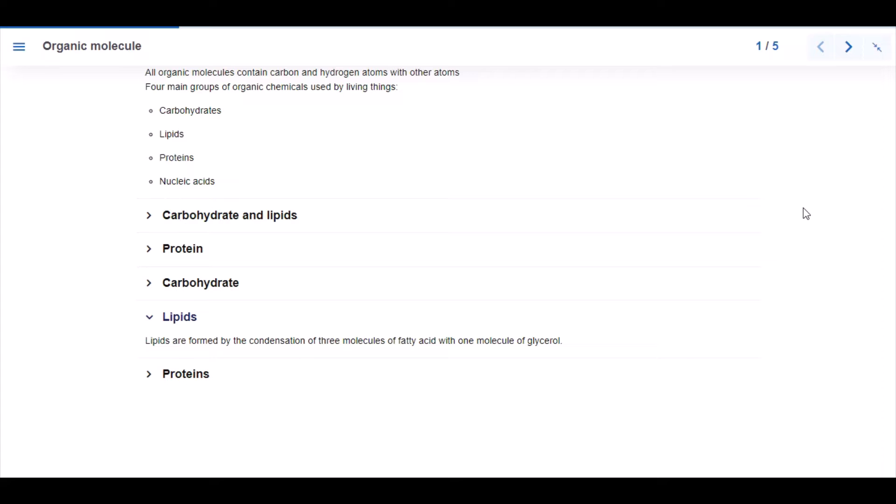Lipids are formed by the condensation of three molecules of fatty acid with one molecule of glycerol. Proteins are made up of long chains of subunits called amino acids, and some proteins are thousands of amino acids long.